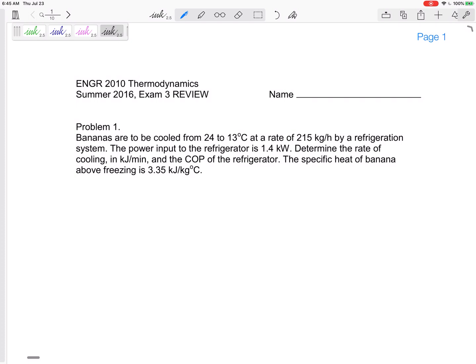I think the hardest part for these problems in chapter six is just labeling correctly the information that it gives us. We've got some equations we can use. Is this Q_H or Q_L? What is this? The bananas are cooled from 24 to 13 degrees C at a rate - this is like a mass flow rate, m_dot. It's a refrigerator. The power input would be the W_dot in.